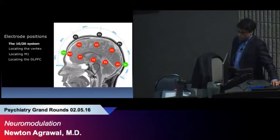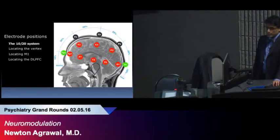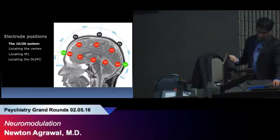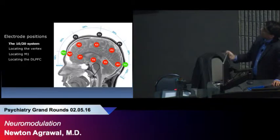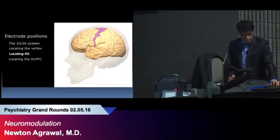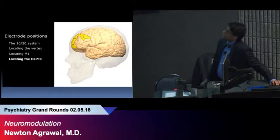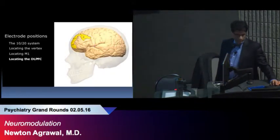So in order to actually localize the target areas, they use the 10-20 system, the EEG 10-20 system. It involves basically localizing C3 for the primary motor cortex and F3 and FP1 for the dorsolateral prefrontal cortex. Here is M1, Brodmann area 4, and the dorsolateral prefrontal cortex, dorsolateral 9 and 10.